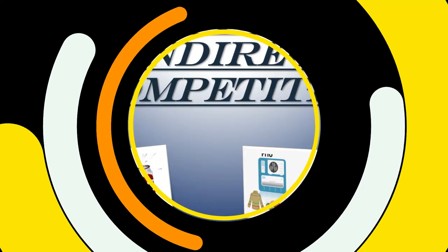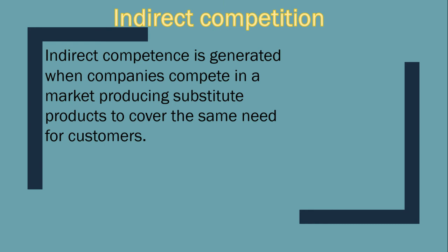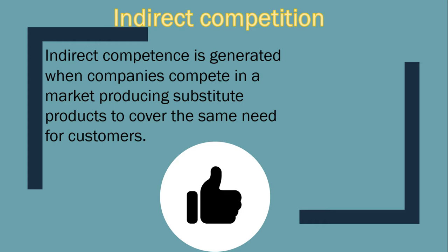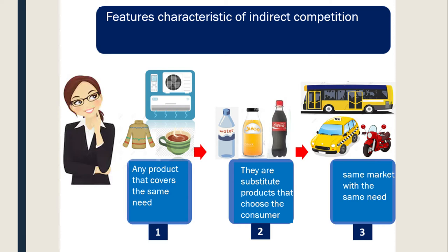Direct and Indirect Competition in Marketing. Indirect Competition is generated when companies compete in a marketing process to offer products that cover the same need for the customer. It refers to any product that satisfies the same need — products that the consumer chooses within the same market.